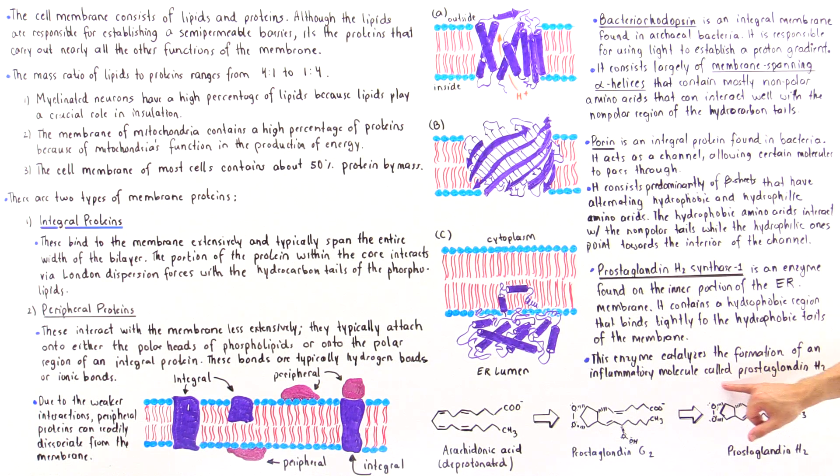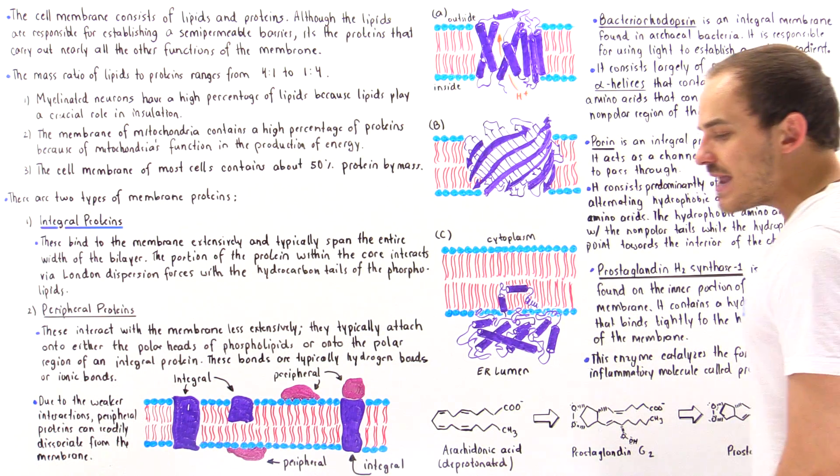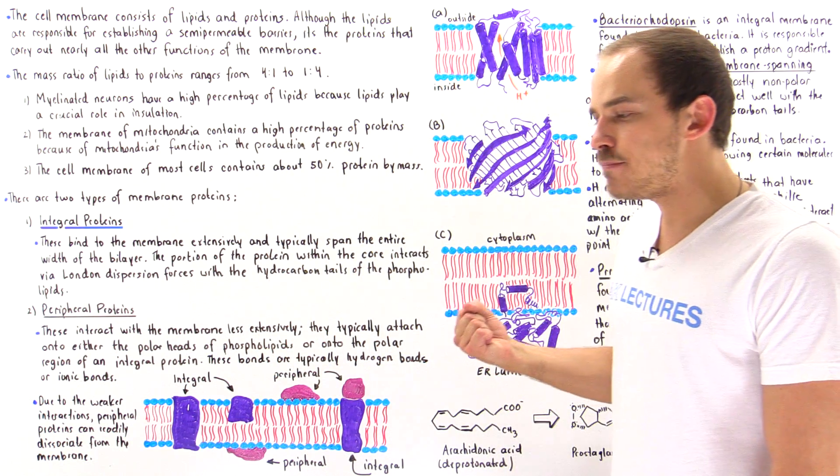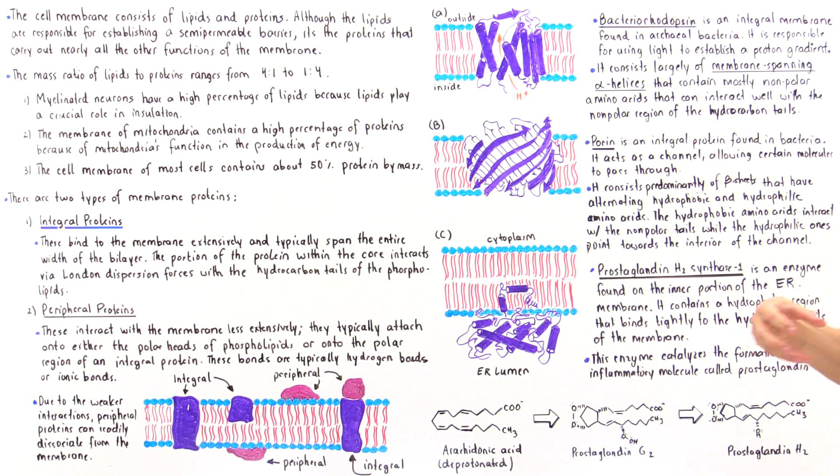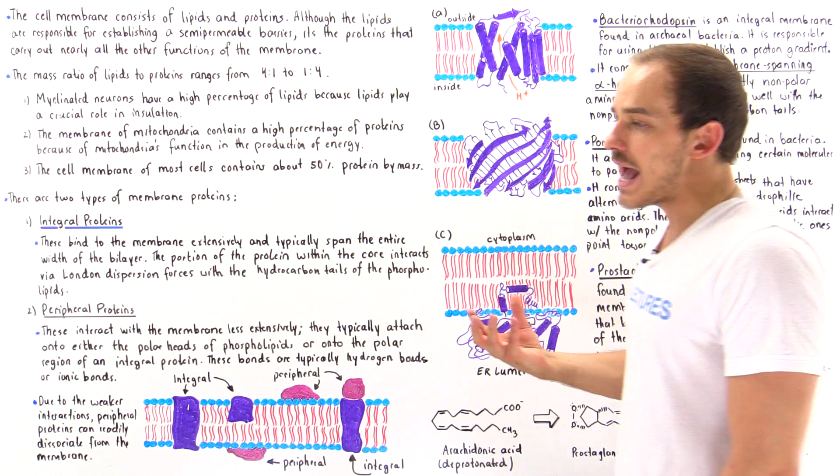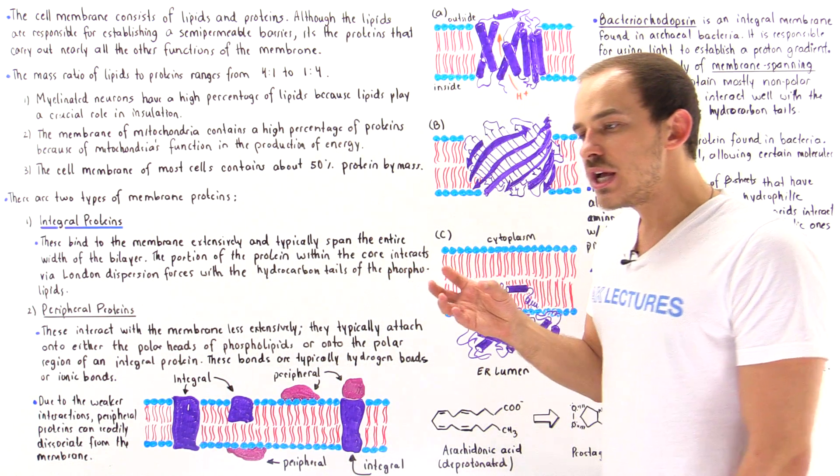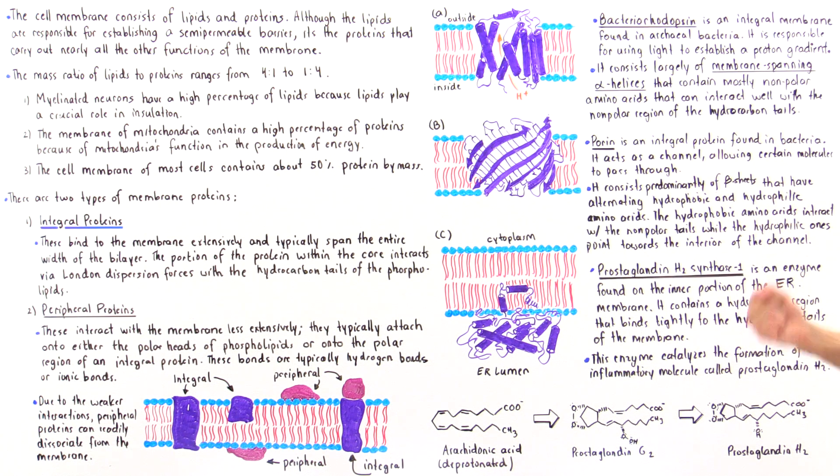And what prostaglandin H2 does is it initiates the inflammation response and stimulates that inflammation response that is carried out by our immune system. It also regulates the secretion of gastric acid by the gastric cells of our stomach.